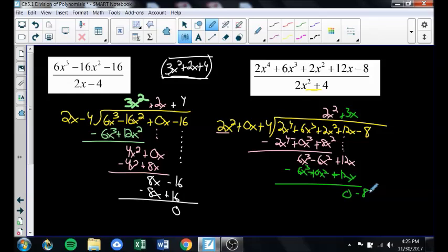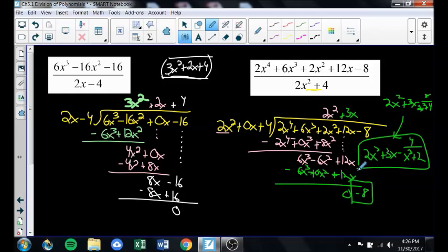2x squared can't go into negative 8. This is my remainder. So this didn't work out so bad. This ended up being 2x squared plus 3x minus 8 over 2x squared plus 4. I'll reduce that fraction. So it's 2x squared plus 3x minus 4 over x squared plus 2. There's a division. That's long division.